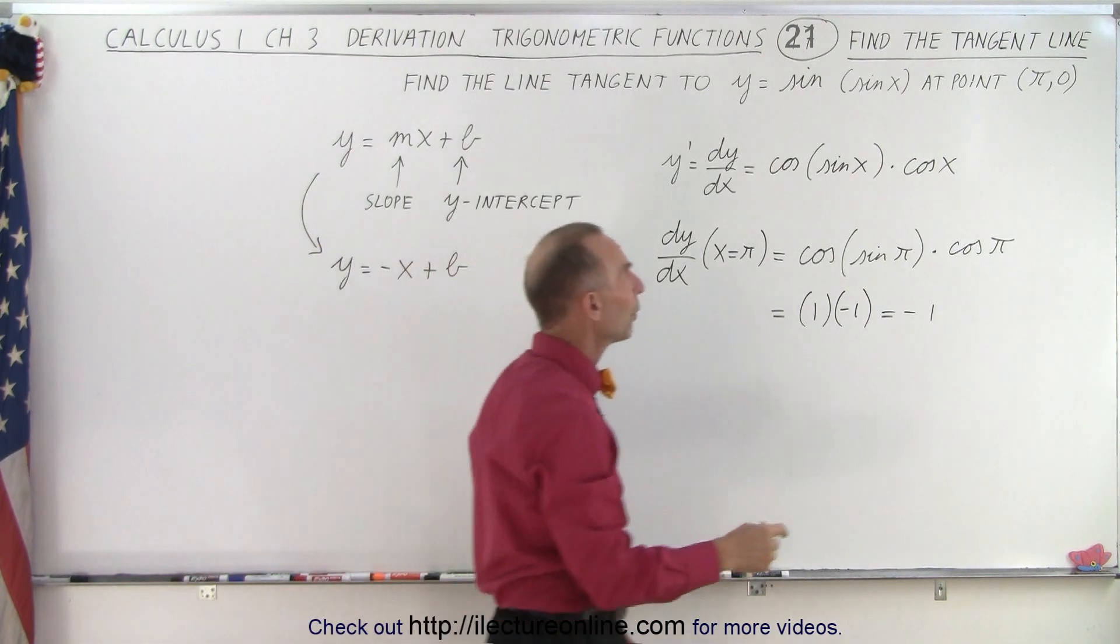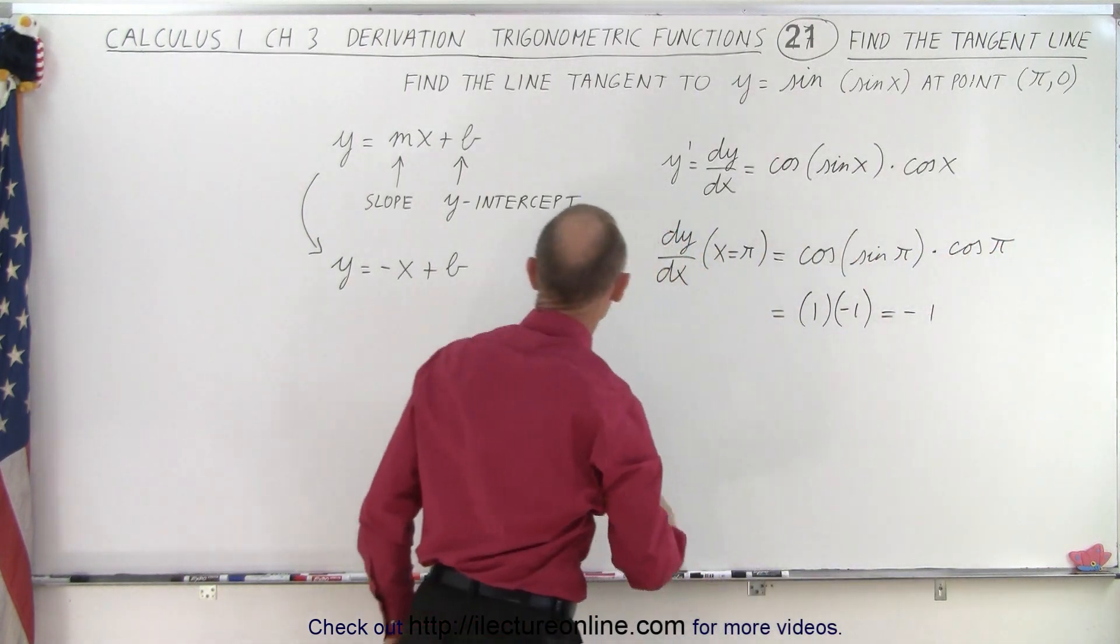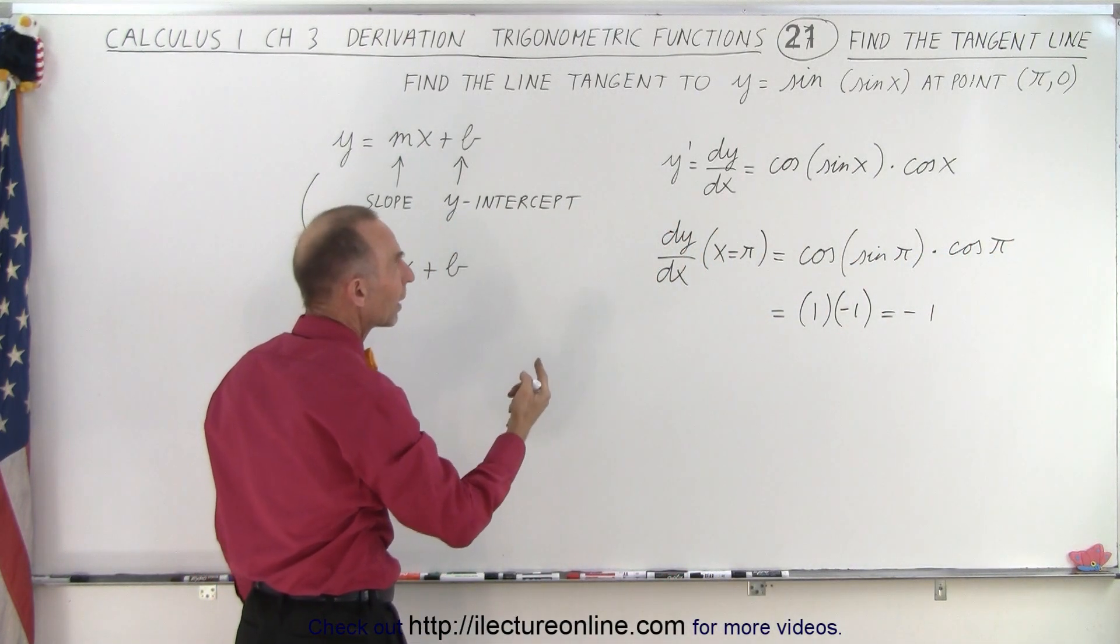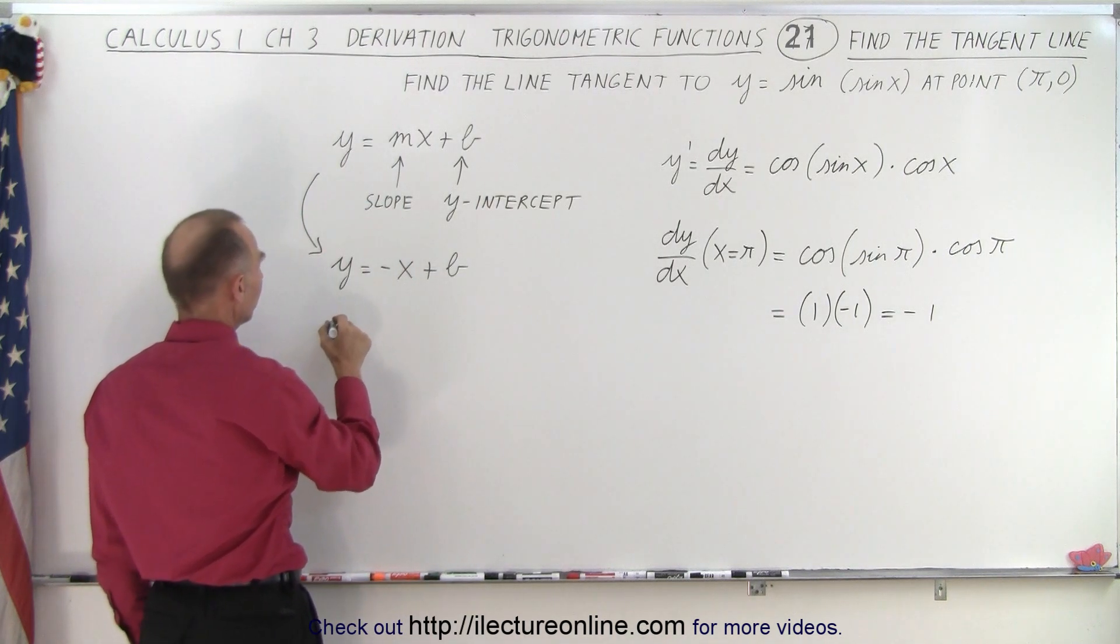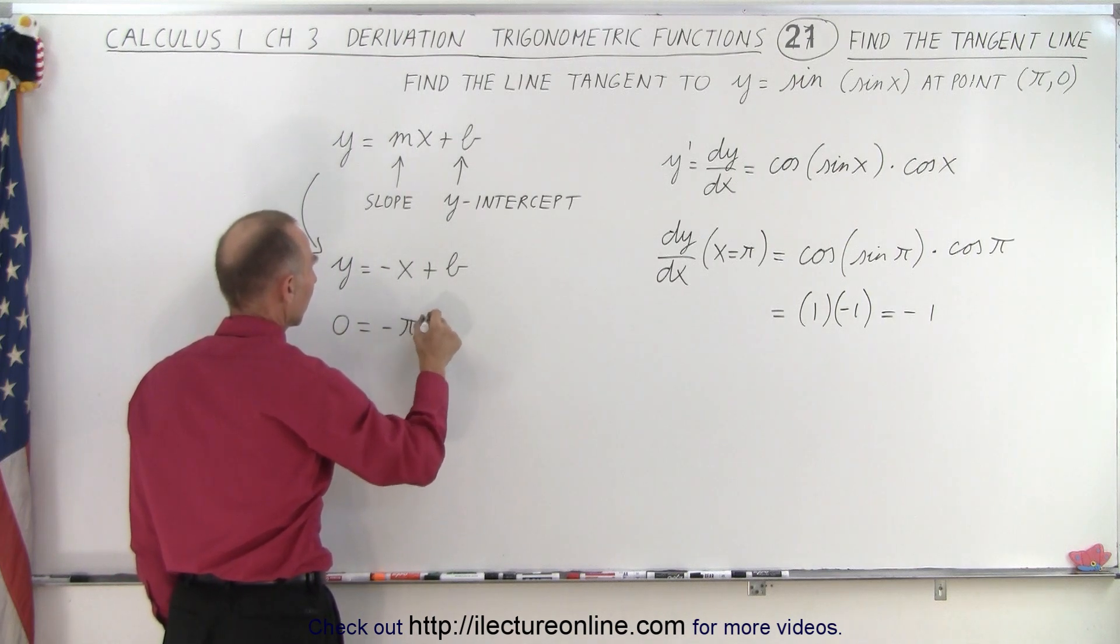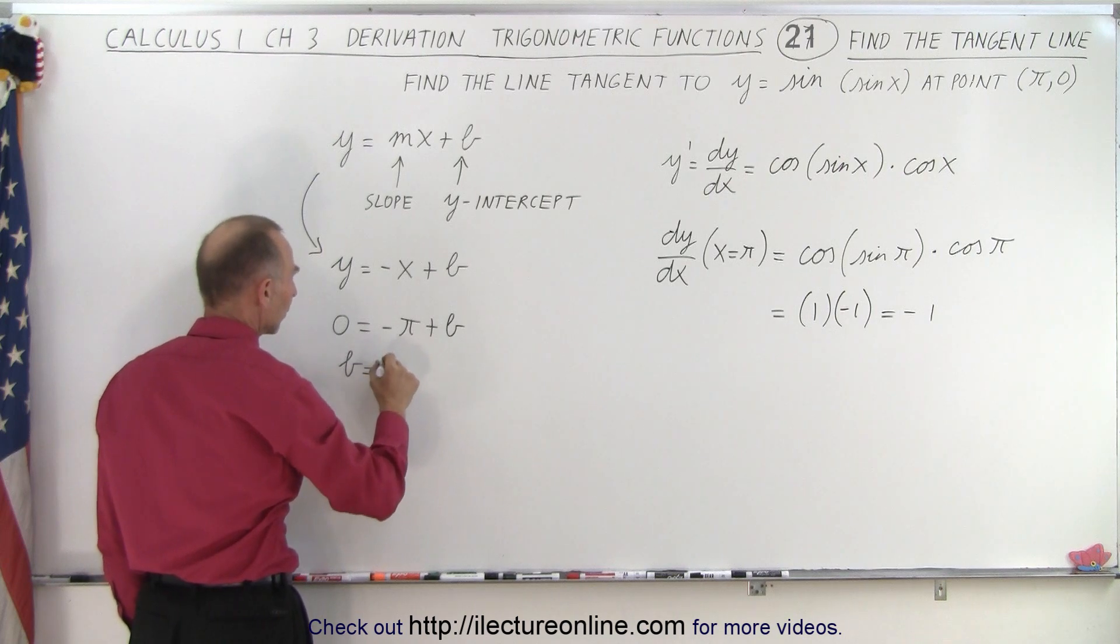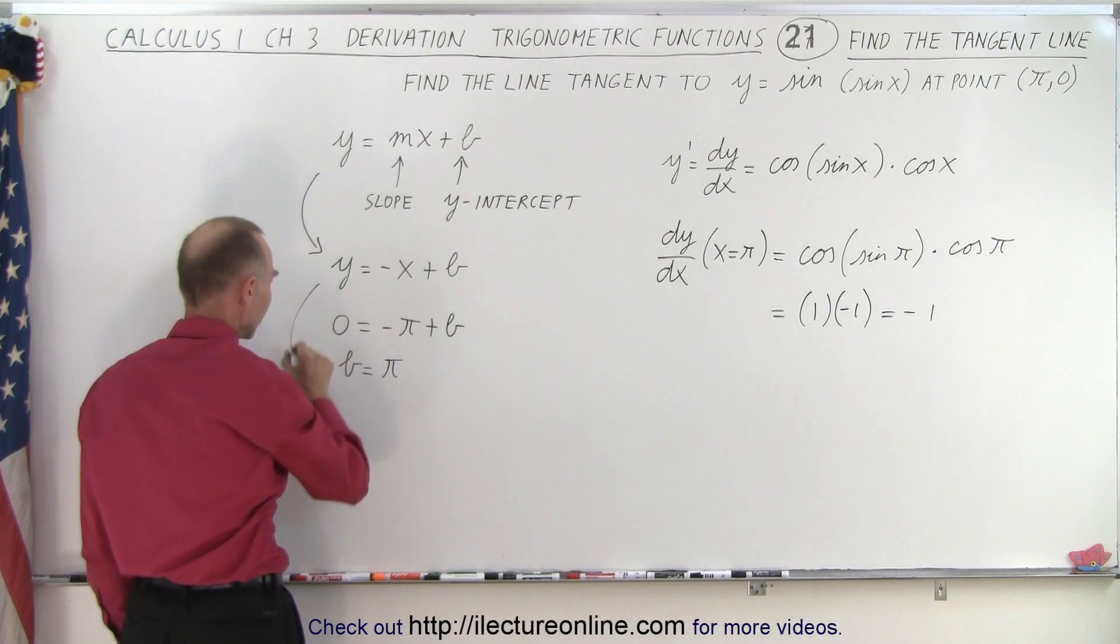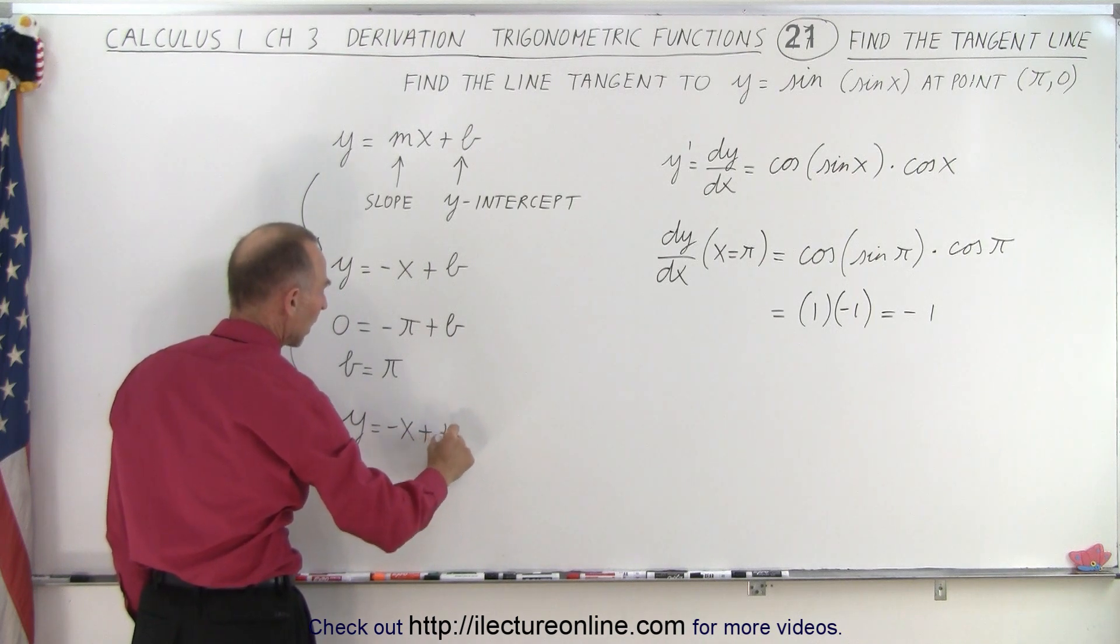To do that, we're given a point on the line, pi and 0, so we can plug that in for x and y in our equation. So we're going to let y equals 0 equals and x equals pi. So therefore, we realize that b equals pi, and therefore our equation then becomes y equals minus x plus pi.